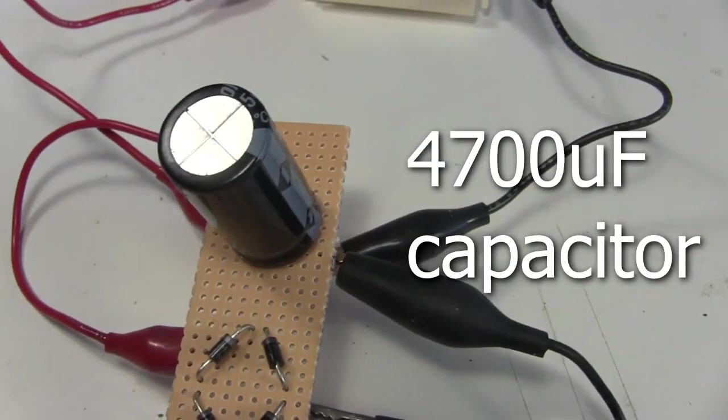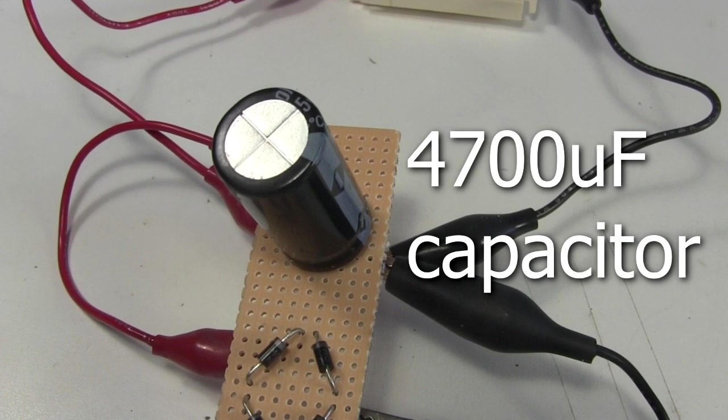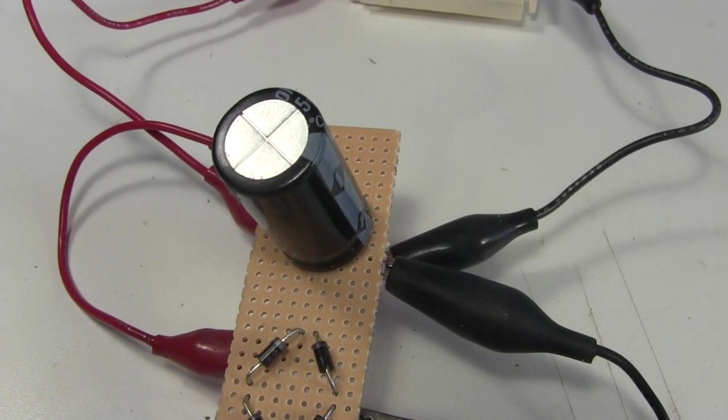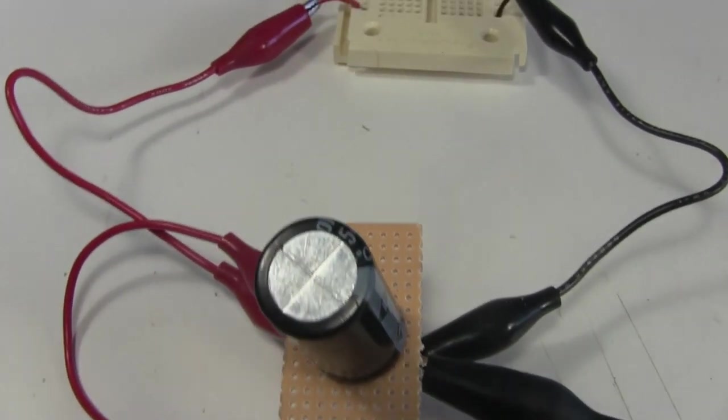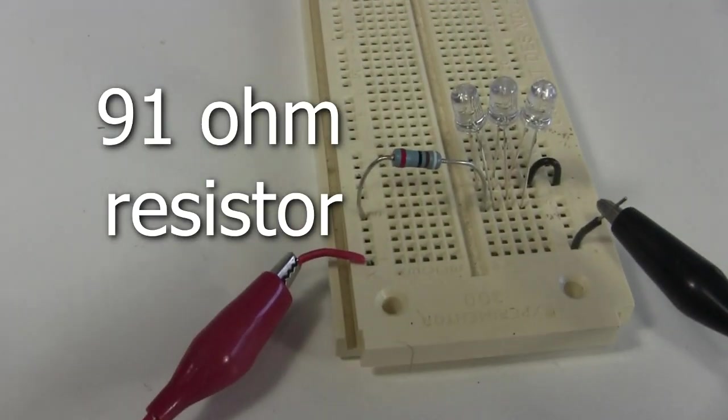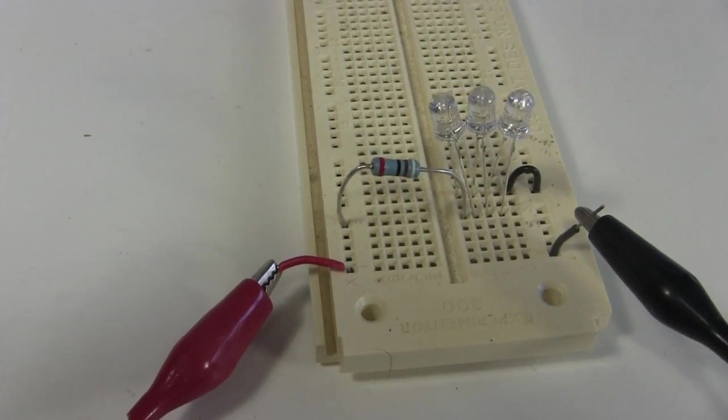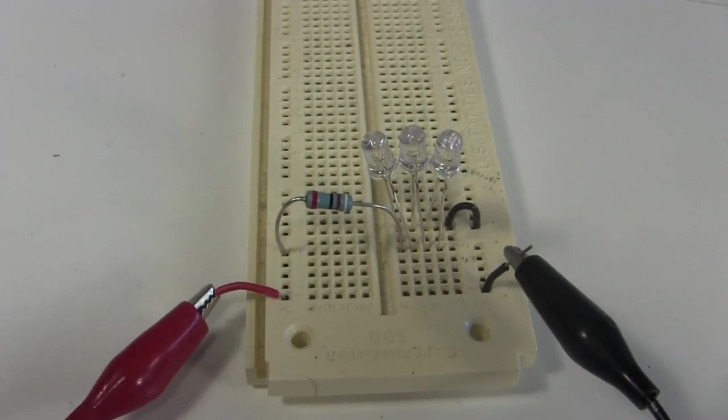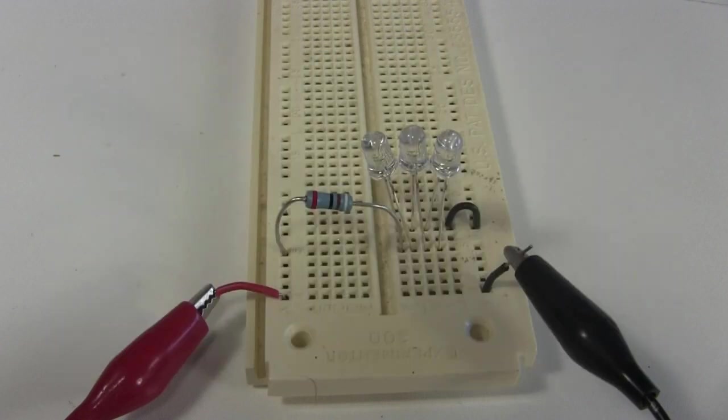I also added a 4700 microfarad 35 volt capacitor to smooth it out, and to store energy for when the pulley is slowed down or stopped. And for some current protection for the diodes, I added a 91 ohm half watt resistor after the capacitor. It was likely that there was more power available than one LED could handle, so I also tested light levels from two to four LEDs, and settled on three.